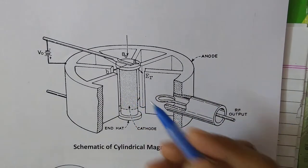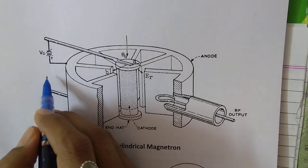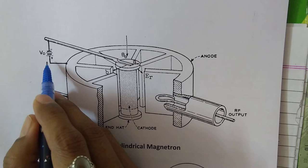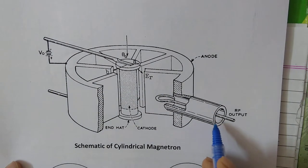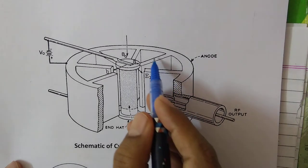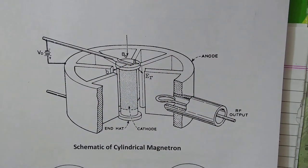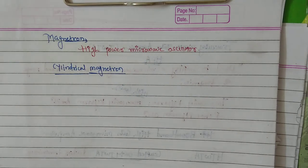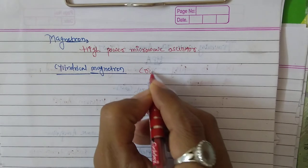The bias voltage between cathode and anode is given, and the RF output is taken from one of the cavities. All these anode cavities are internally connected. So this is how the constructional details for the cylindrical magnetron are. Basically this cylindrical magnetron is a crossed field microwave tube.